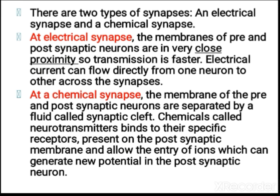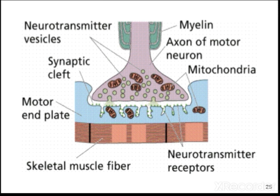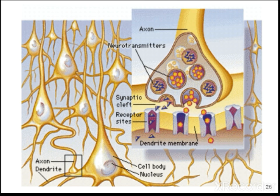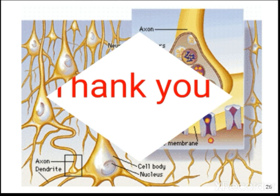In chemical synapses, the pre- and post-synaptic neurons are separated by a larger gap compared to electrical synapses. Chemicals called neurotransmitters are produced and are helpful in passing the impulse from one neuron to another. The neurotransmitter is formed and passed through the dendrite membrane of the next neuron. Today we are concluding up to this point, and we will meet in the next class.